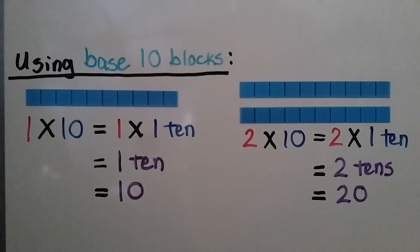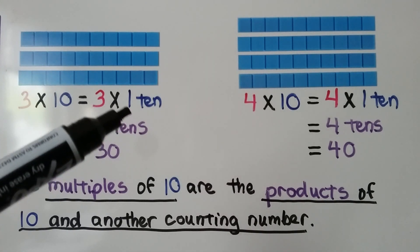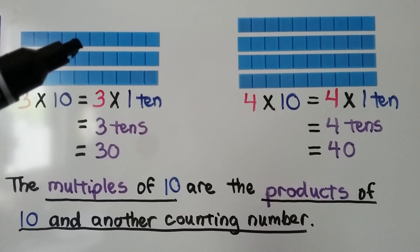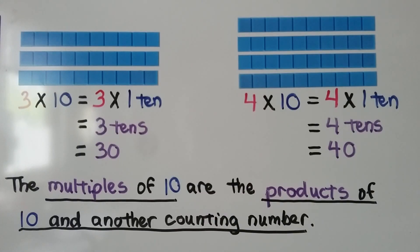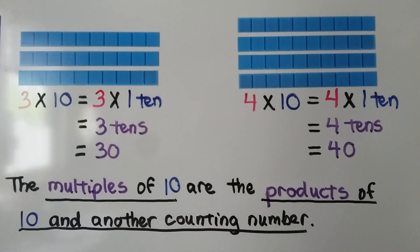So this also connects to place value — we're using the tens place. Here we have three strips of 10; that's 3 times 10, equal to 3 times 1 ten. Here we have 4 strips of 10; that's 4 times 10, which is equal to 4 times 1 ten, which is equal to 4 tens, which is equal to 40.